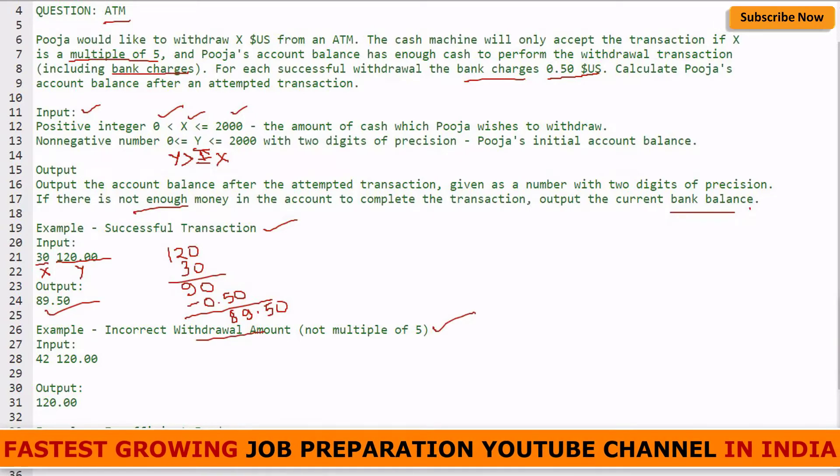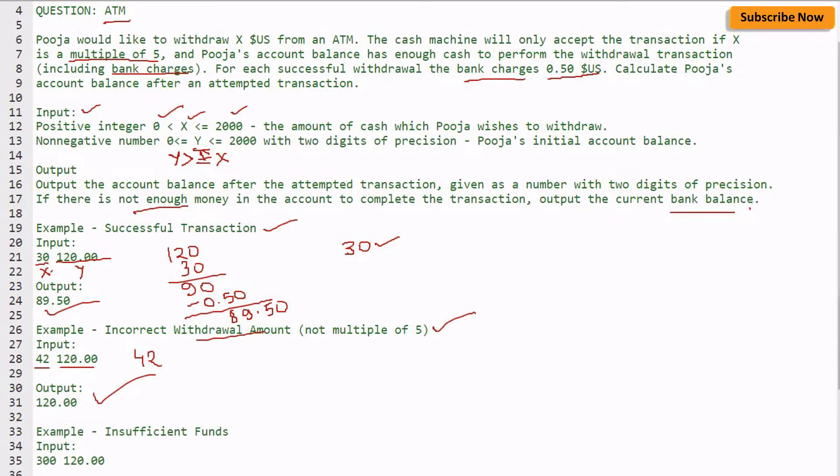Now see another example of incorrect withdrawal amount which is not a multiple of five. Here the amount entered is 42. Though the bank balance is bigger than the withdrawal amount, 42 is not a multiple of five. Hence the transaction will not be successful and the output will be the initial account balance.